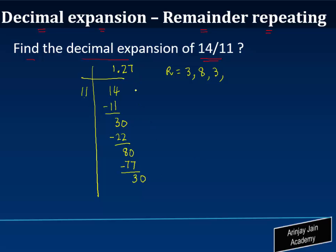Again a 0, right, 30. So 11 times 2 gives me 22. I subtract 22 from 30 and I get 8. 8 is the remainder. Now again add a 0 over here. 11 times 7 gives you 77. Subtract this from this, the remainder is 3.